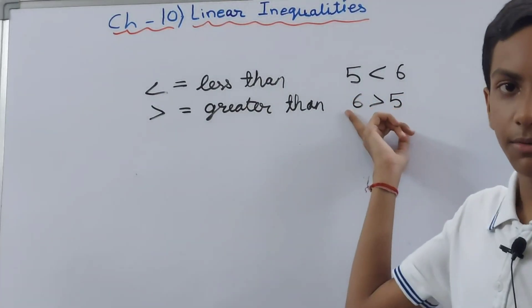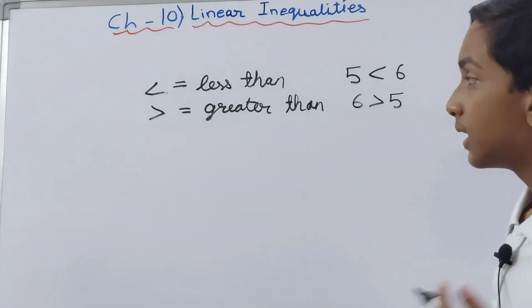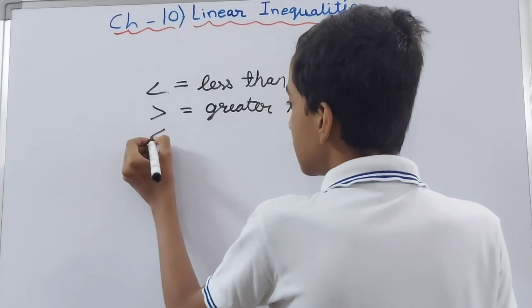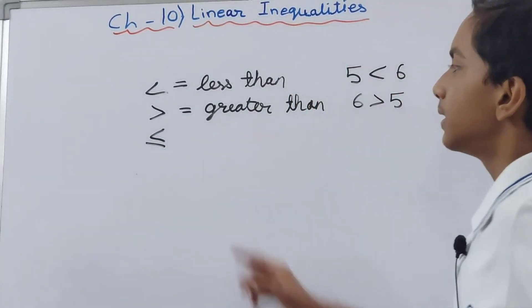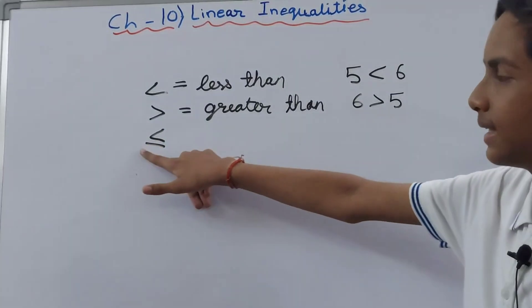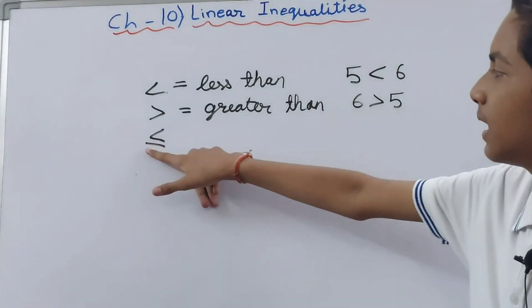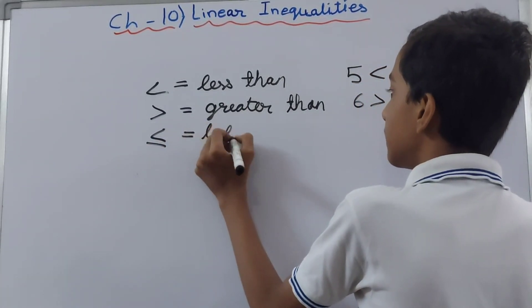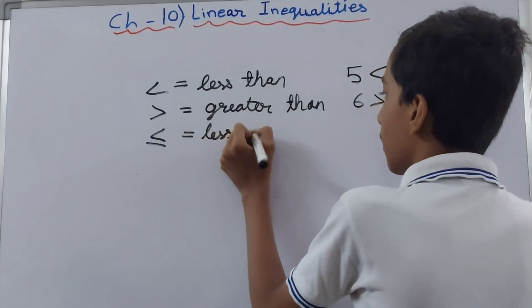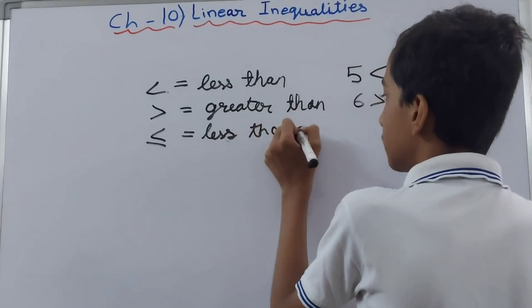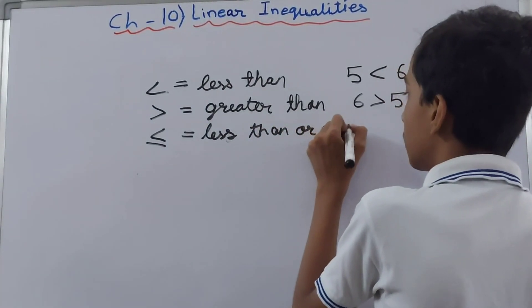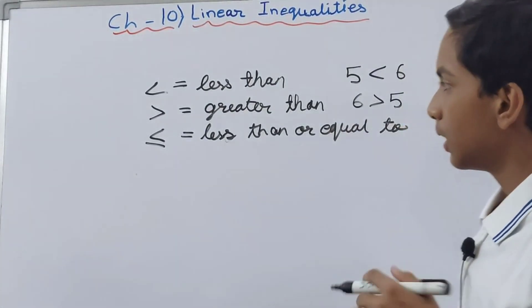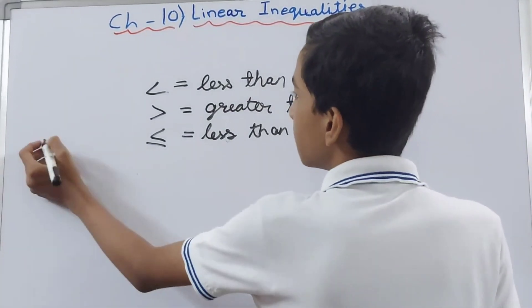Now we will see two new signs, but they are almost the same. First, we have this less than sign, and then we have drawn a horizontal bar at the bottom. This represents less than or equal to. Suppose I take an example.